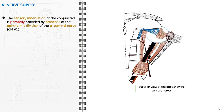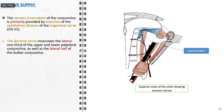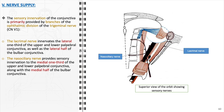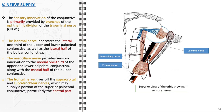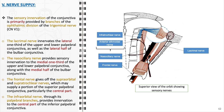The sensory innervation of the conjunctiva is primarily provided by branches of the ophthalmic division of the trigeminal nerve, CN V1. The lacrimal nerve, a branch of the ophthalmic division, innervates the lateral one-third of the upper and lower palpebral conjunctiva and the lateral half of the bulbar conjunctiva. The nasociliary nerve, another branch of the ophthalmic division, supplies sensory innervation to the medial one-third of the upper and lower palpebral conjunctiva and the medial half of the bulbar conjunctiva. The frontal nerve, the largest branch of the ophthalmic division, gives off the supraorbital and supratrochlear nerves, which may supply the central part of the superior palpebral conjunctiva. Lastly, the infraorbital nerve, arising from the maxillary division of the trigeminal nerve CN V2, provides innervation to the central part of the inferior palpebral conjunctiva through its palpebral branches.